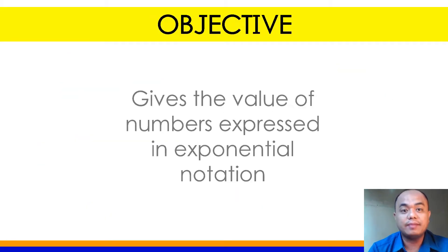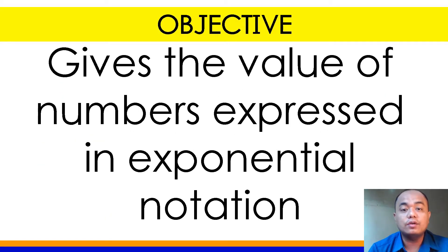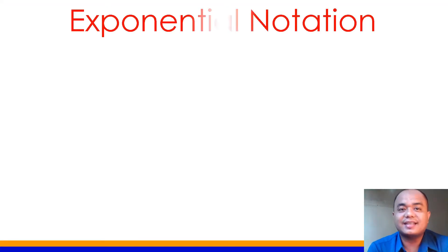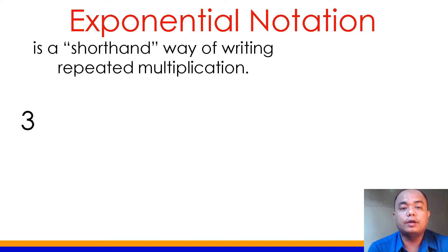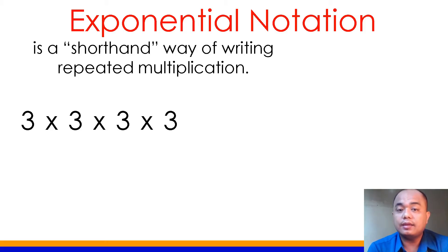Our lesson for this time is to give the value of numbers expressed in exponential notation. As we discussed last time, exponential notation refers to the shorthand way of writing repeated multiplication. For example, instead of writing 3 times 3 times 3 times 3, which is somewhat long, we can express this in exponential notation.